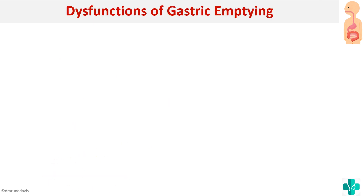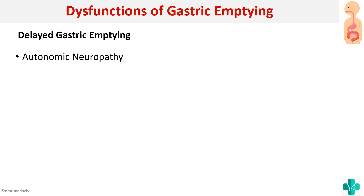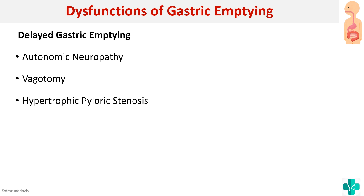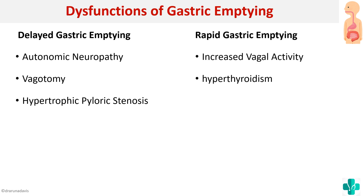For applied aspects, gastric emptying dysfunction can involve either delayed or rapid gastric emptying. Causes of delayed gastric emptying include autonomic neuropathy as seen in diabetes mellitus, vagotomy (cutting the vagus nerve removes its promotion of emptying), and hypertrophic pyloric stenosis where the thickened pyloric sphincter does not open well. Causes of rapid gastric emptying include increased vagal activity and hyperthyroidism, as thyroxine stimulates gastric emptying.